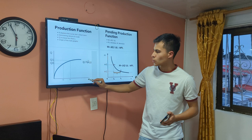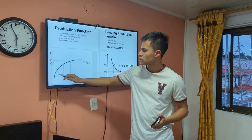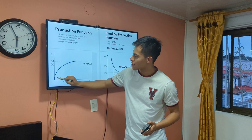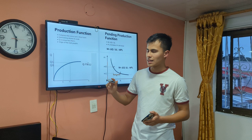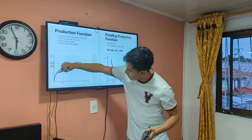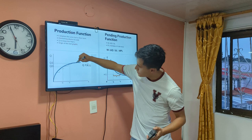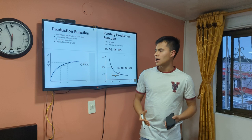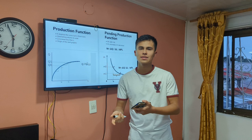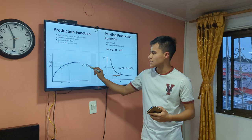We can see that the curve exhibits diminishing returns, meaning that as labor increases, production increases by progressively less. Businesses and producers can offer more jobs, but they will get fewer returns in production. This is because capital remains constant.